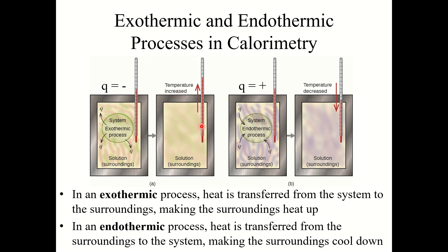In an endothermic process — like the ammonium nitrate ice pack example — heat is transferred from the surroundings to the system, which causes the temperature to decrease because the surroundings have cooled down. They have lost heat.